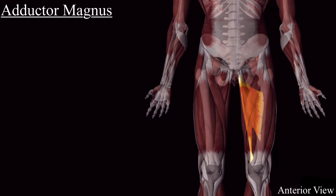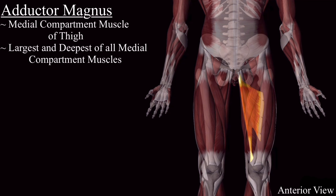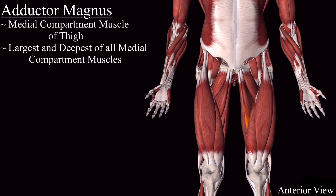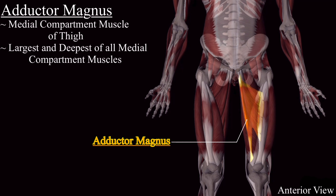Adductor magnus muscle is also one of the medial compartment muscles of the thigh. It is the largest and deepest of all the muscles in the medial compartment. As you can see, this is the largest of all the muscles compared to other muscles in the medial compartment, and also it is the deepest of all the muscles in the medial compartment.